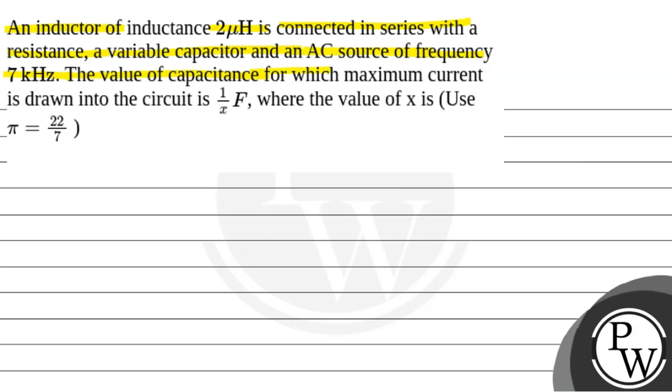The value of capacitance for which maximum current is drawn is 1 by x farad, where the value of x is, use pi equals 22 by 7. So here we have an inductor which is 2 microhenry connected in series with resistance and a variable capacitor with source frequency f equals 7 kHz.